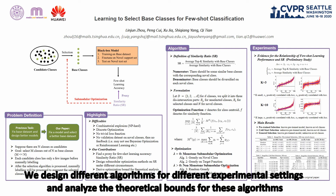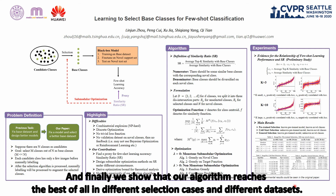We design different algorithms for different experimental settings and analyze the theoretical bounds for these algorithms. Finally, we show that our algorithm reaches the best performance across different selection cases and different datasets.